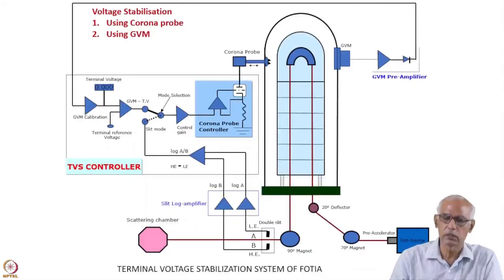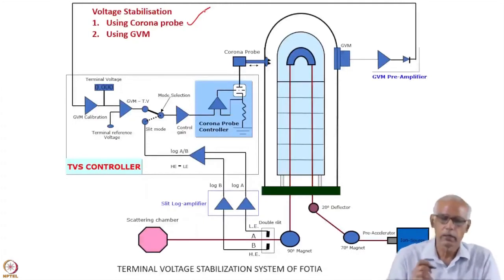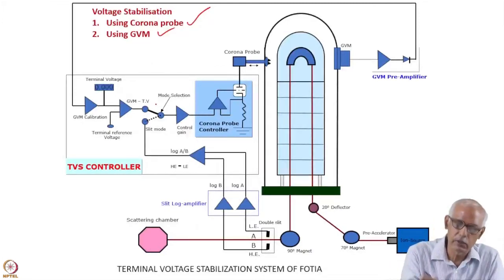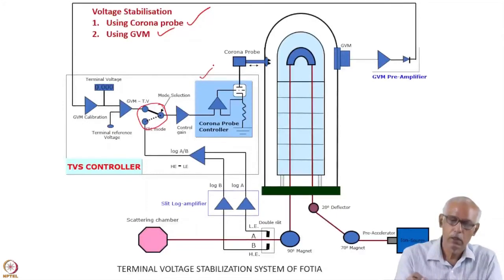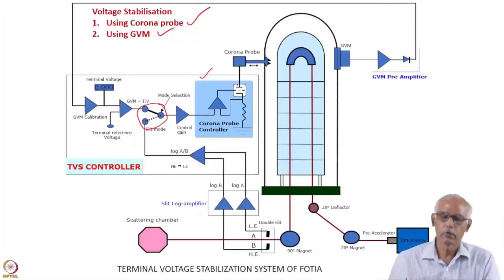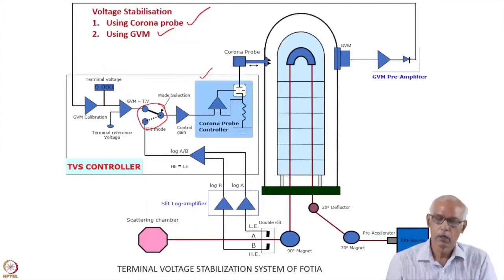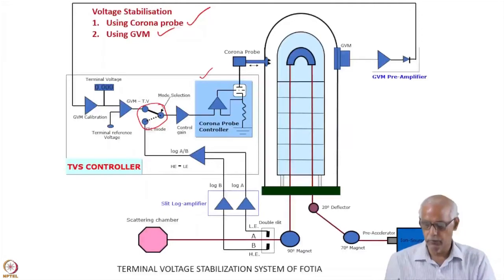How the voltage stabilization is done: one method uses a corona probe, and the other uses the GVM itself. The input to this corona stabilization system comes either from the feedback of the slits, based on energy, or from the GVM itself. This is one circuit of the corona stabilization system used in the 6 million volt tandem accelerator at VRC, which we call a folded tandem ion accelerator.